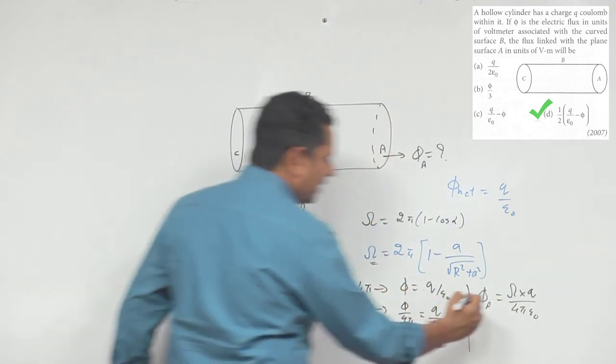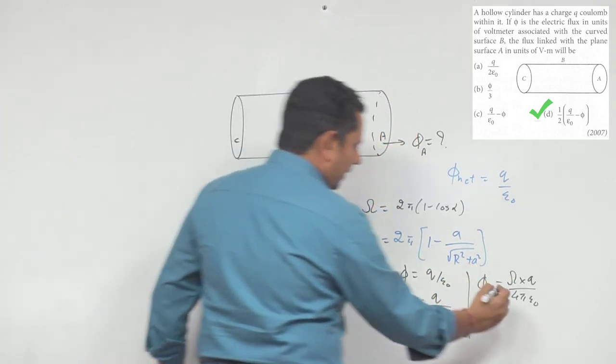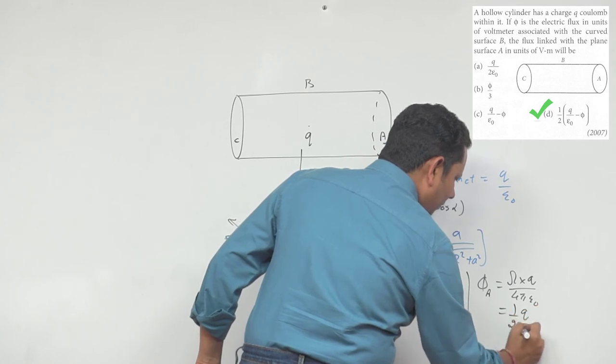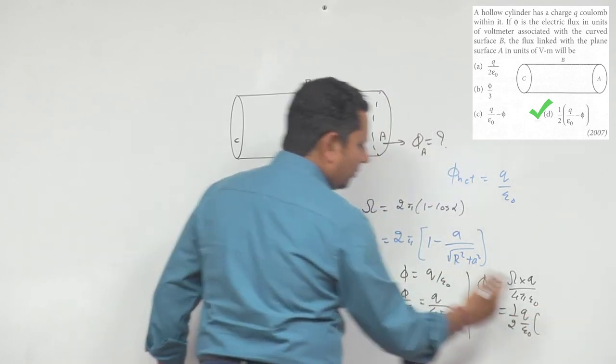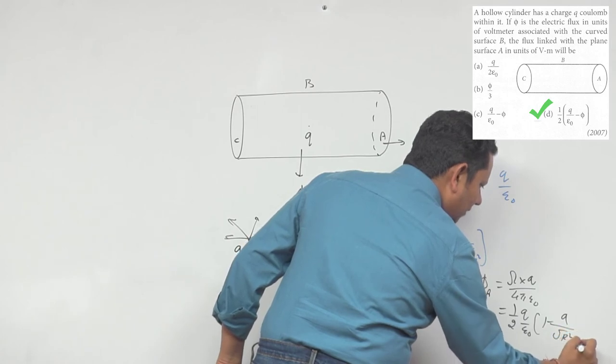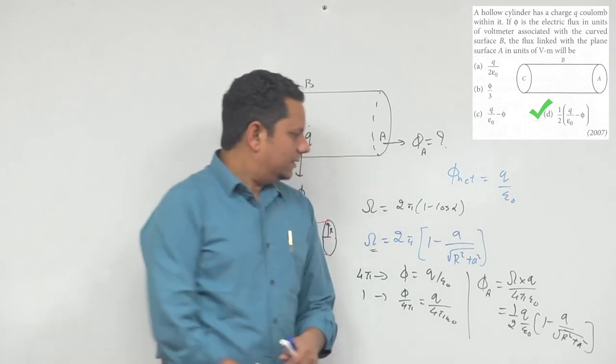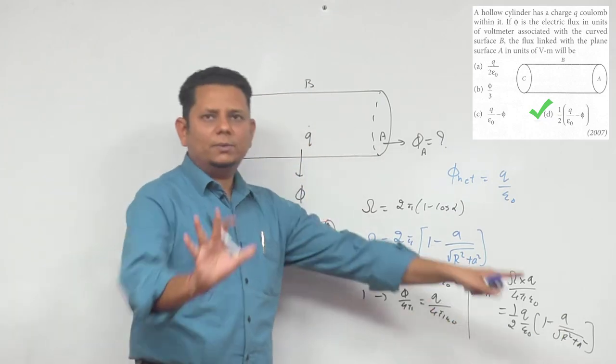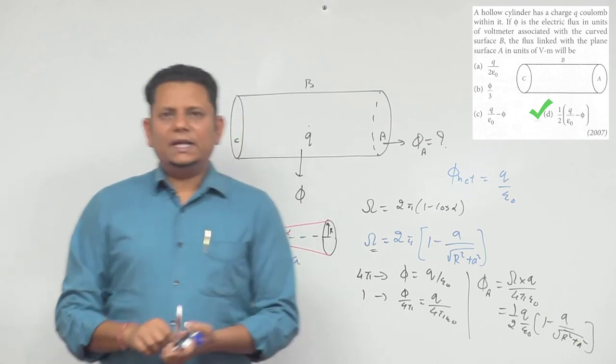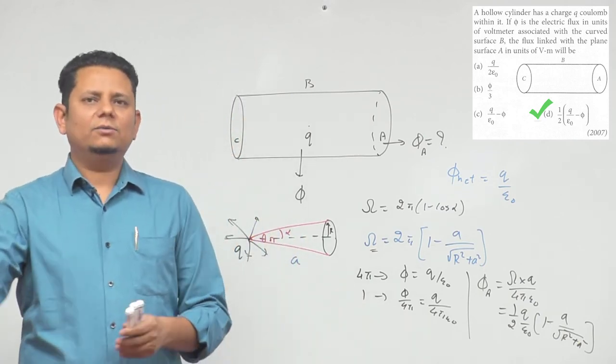If we fit this value here, the flux through side A will be - when you put the value here, 2π cancels, so this becomes half q divided by epsilon naught, and in the bracket comes (1 - a divided by square root of r² + a²). This will be your final value. So this is the correct answer, this is the proper answer. If anyone wants to ask you the proper derivation, so for this particular question, we can say that option number d would be the right answer.